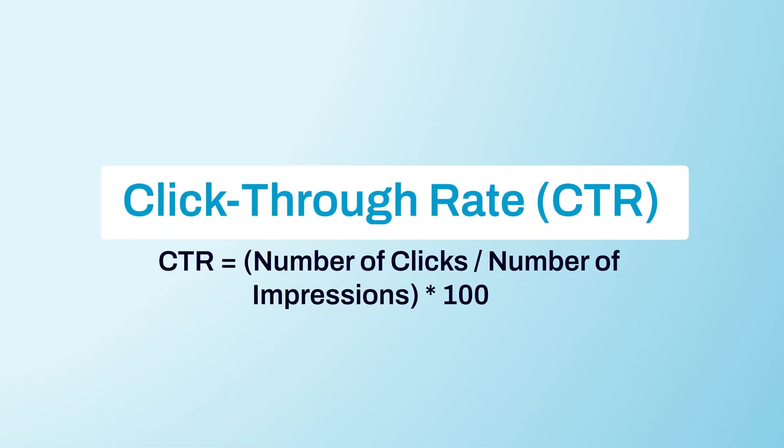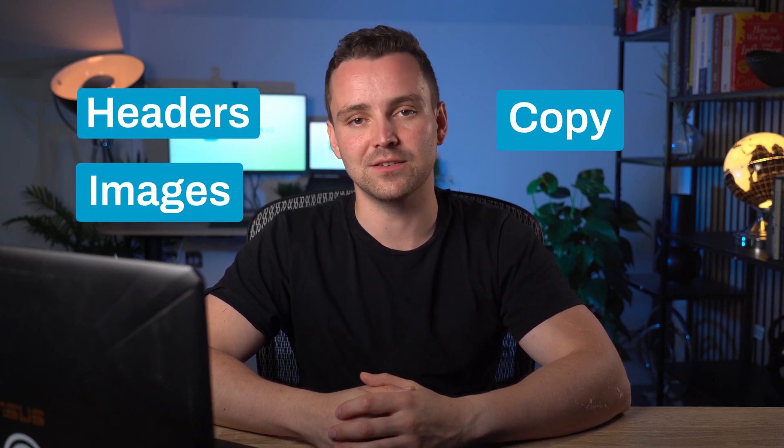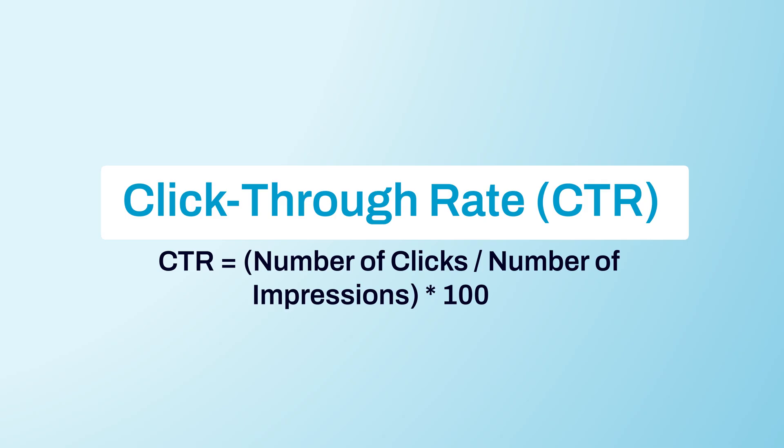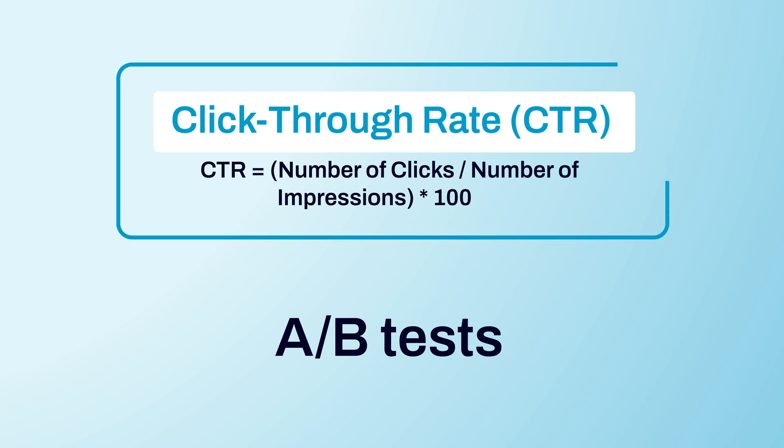Let's now talk about how to analyze Facebook ads with some performance metrics. The first on my list is click-through rate. CTR indicates how effective your ads are in capturing your audience's attention and prompting them to take the desired action. Tracking CTR for each campaign can help you optimize elements like headers, images, or copy on the call-to-action buttons. If you're not sure what will perform better with the chosen audience, consider running A/B tests and using CTR to determine the best approach.